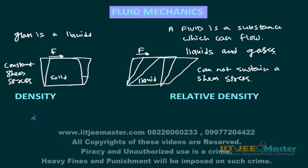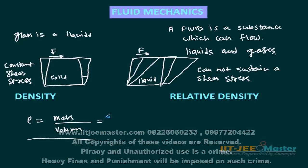Now let us see what is density. For any substance, density is mass divided by volume. We can take mass in grams or kilograms and volume in meter cubed, centimeter cubed, or even in liters. Different places use different practices, but fundamentally density is mass by volume.